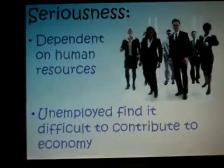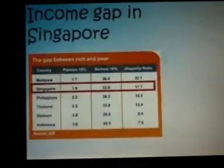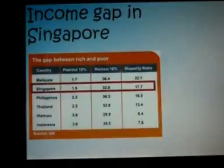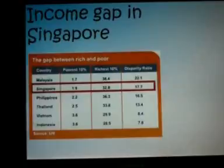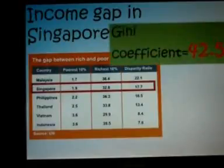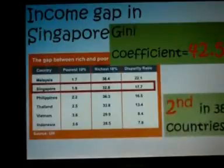Does it affect income distribution too? Most certainly. The 2009 United Nations Development Report on the income gap between the rich and poor in countries with high human development used the Gini coefficient as an indicator. A value of 0 represents absolute equality and 100 represents absolute inequality. Singapore had a Gini coefficient of 42.5 and was ranked second among 38 countries.